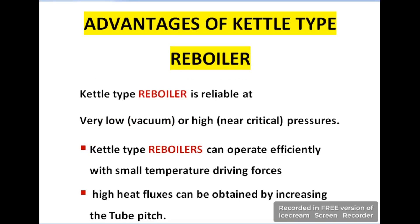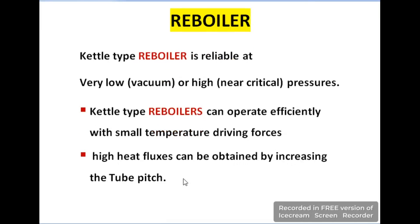Advantages of the kettle type re-boiler: First, kettle type re-boilers may operate at very low pressure as well as at high pressures. Second, kettle type re-boilers can operate efficiently with a small temperature difference. Third, high heat fluxes may be obtained by increasing the tube pitch of the tube bundle.